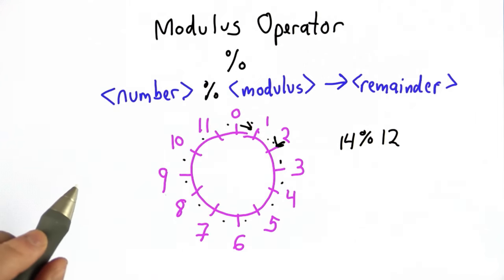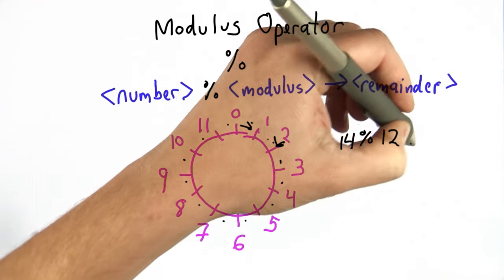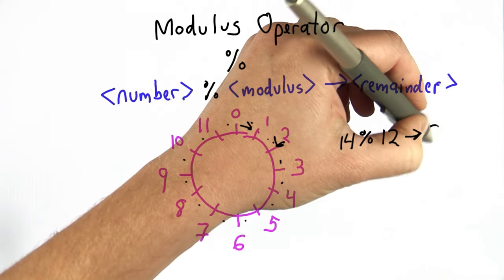That's the same as the remainder we would get by dividing 14 by 12, and that's the result of 14 modulo 12 is 2.